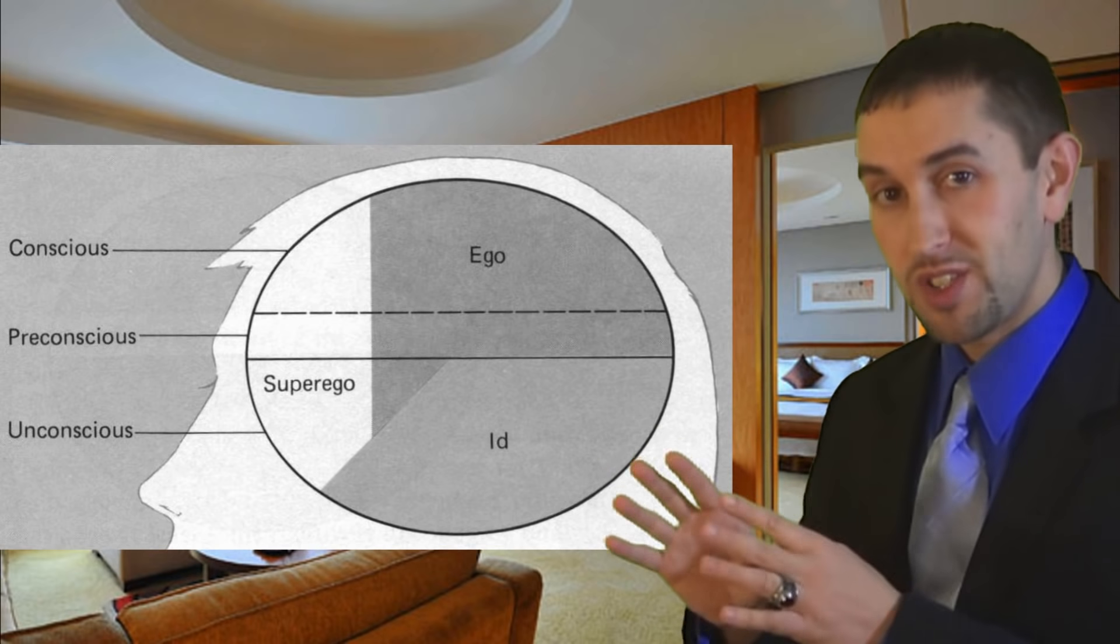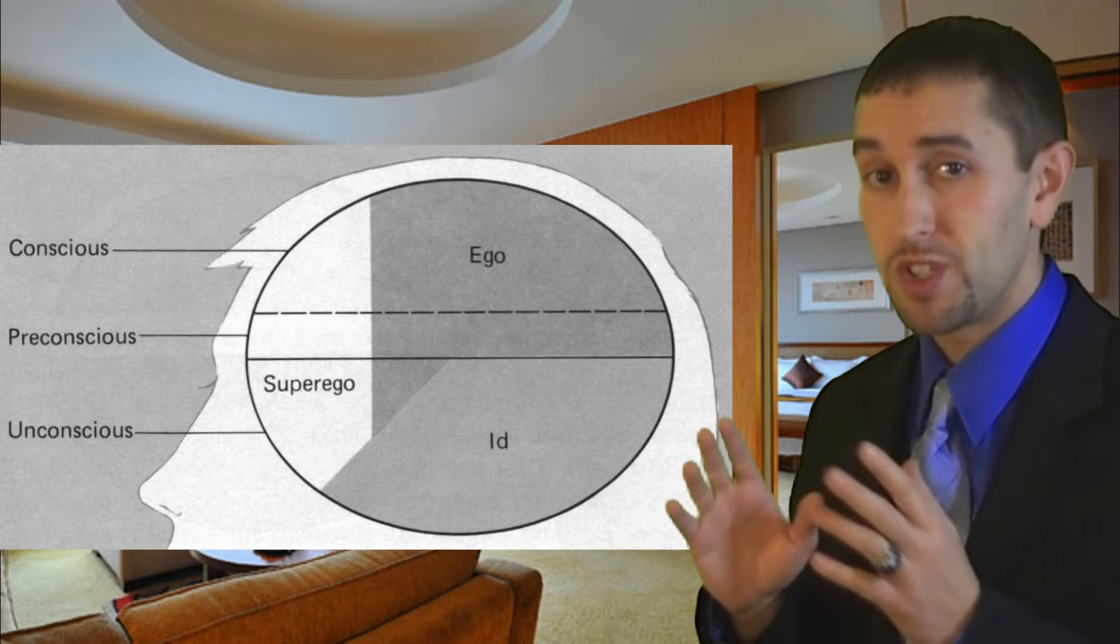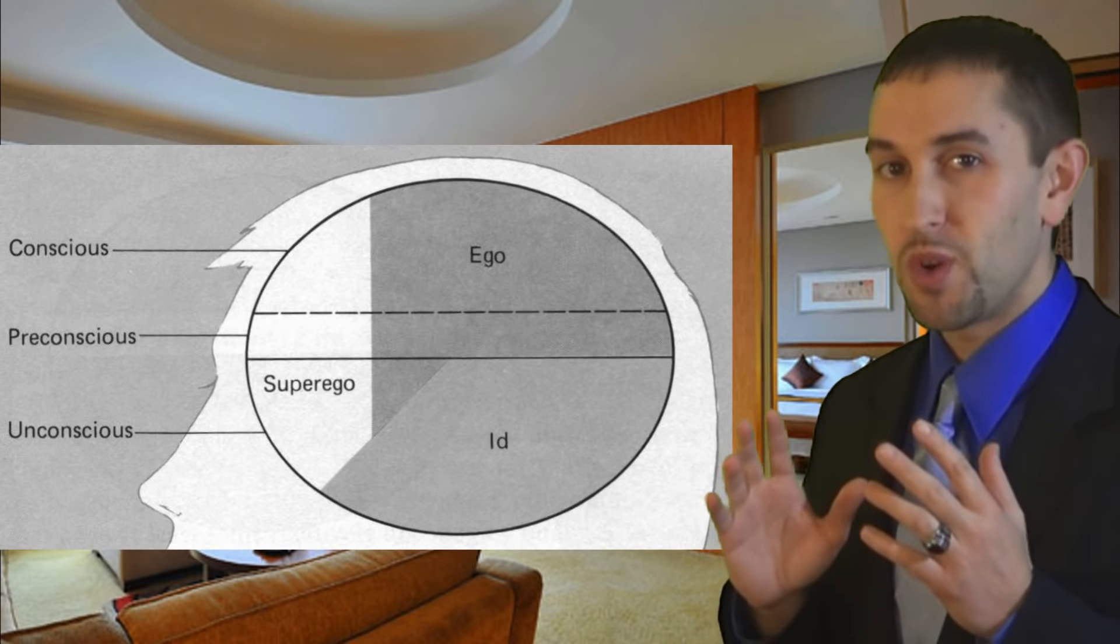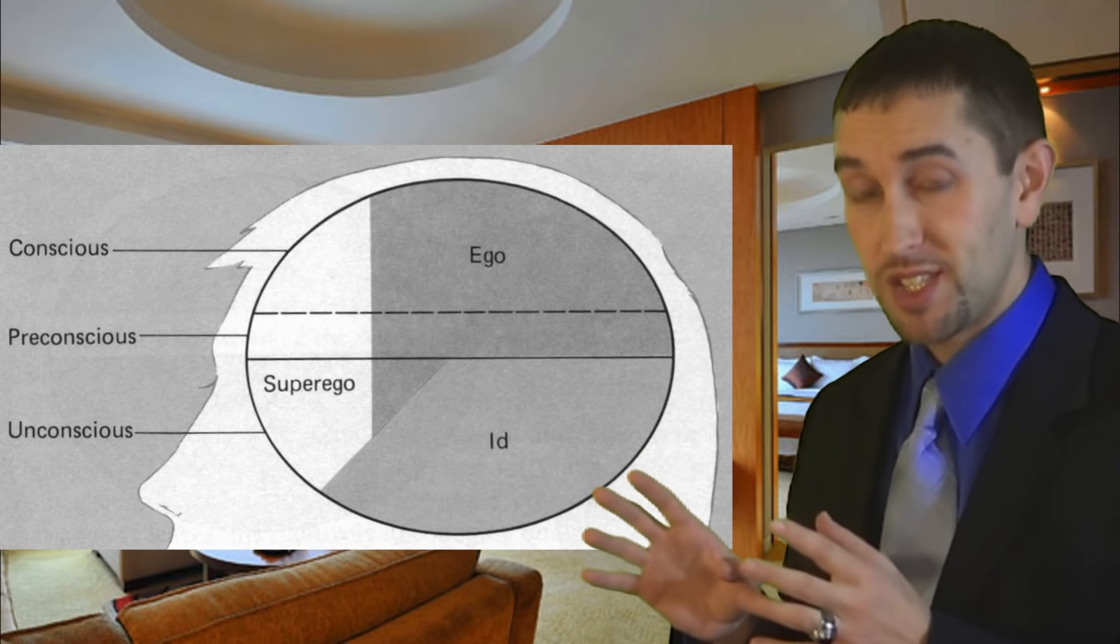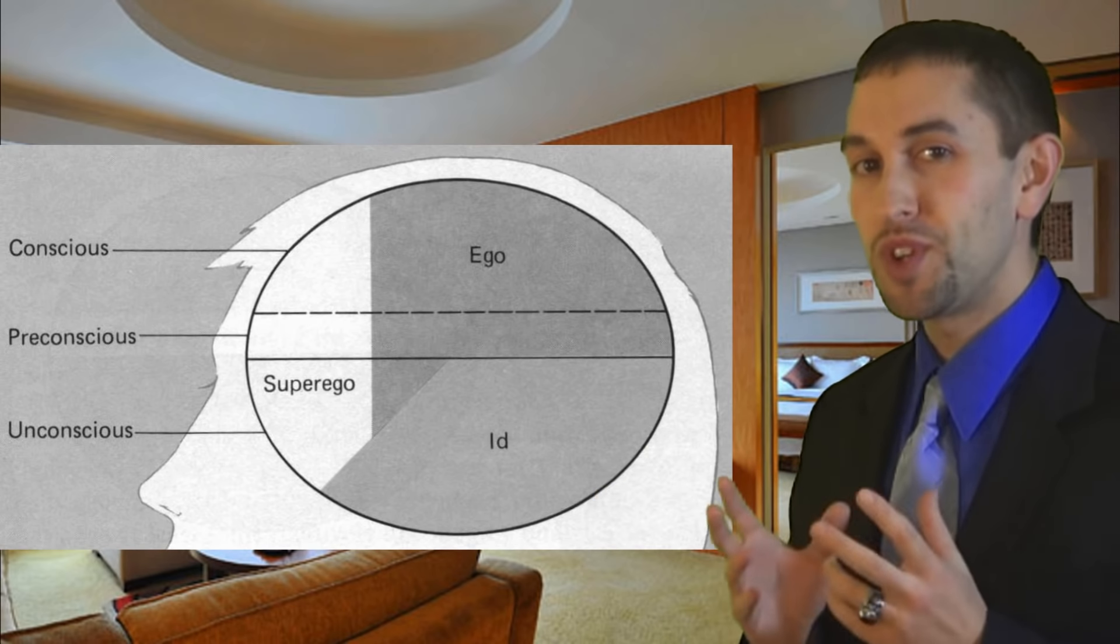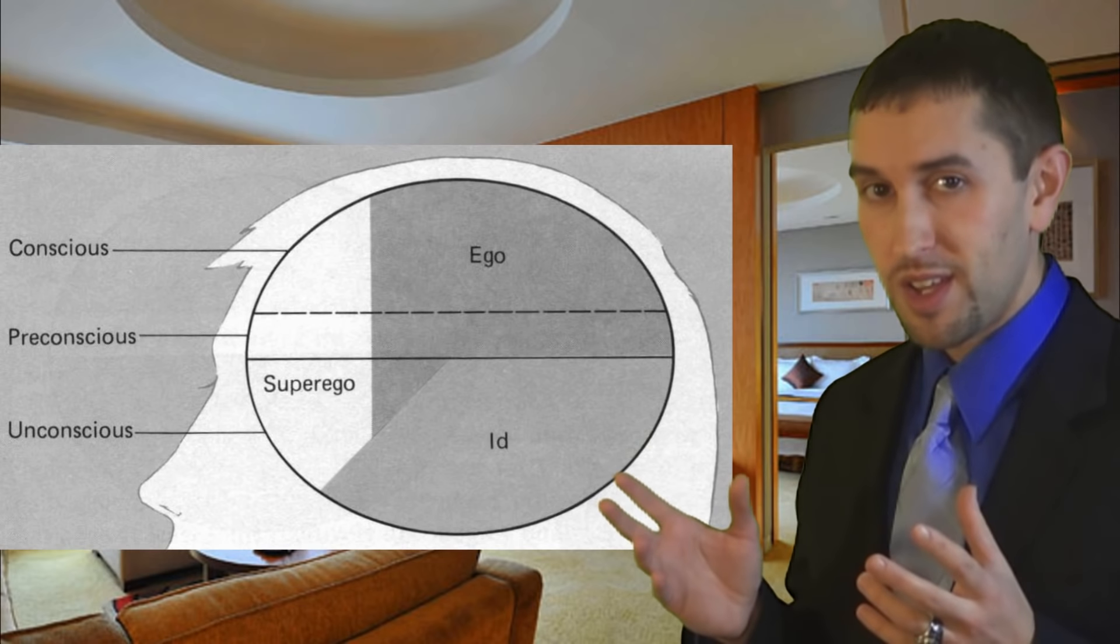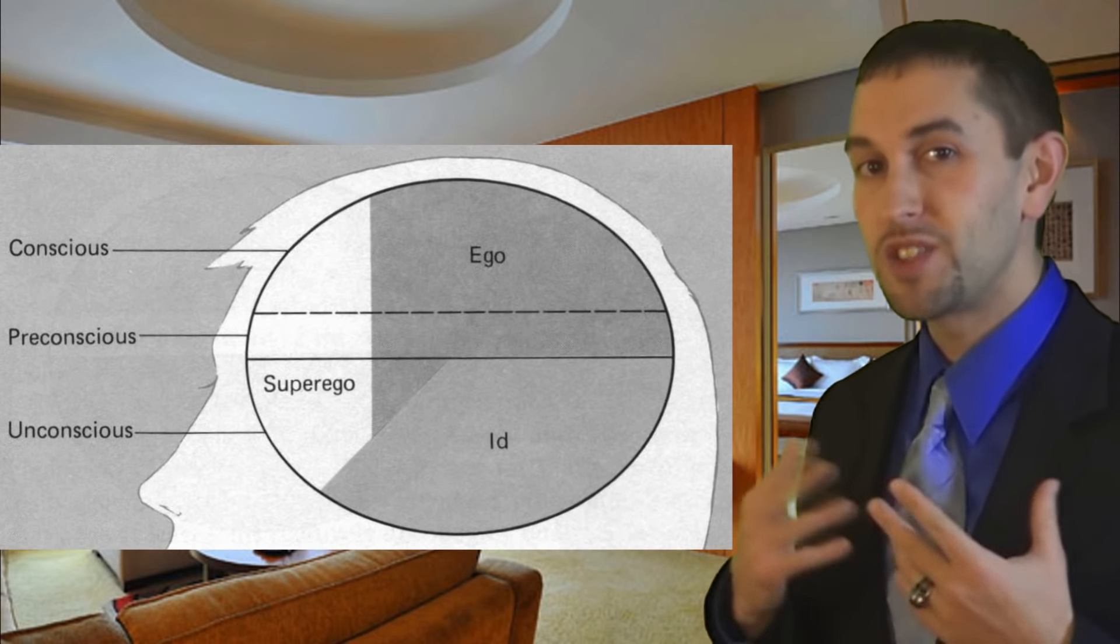If the id expresses itself too much, a person can act in ways that are inappropriate or destructive. Similarly, if the superego has too much freedom, a person can become a rigid perfectionist. The superego would demand moral requirements that are so severe that the person could never live up to them, and he would suffer constant feelings of guilt.